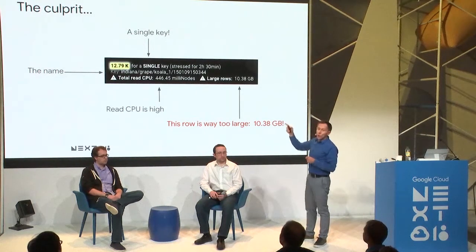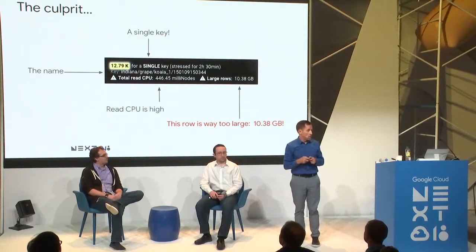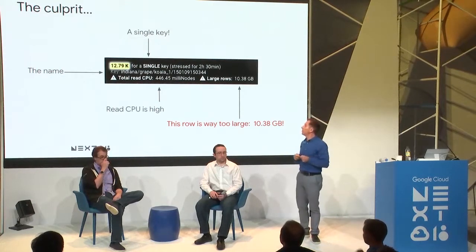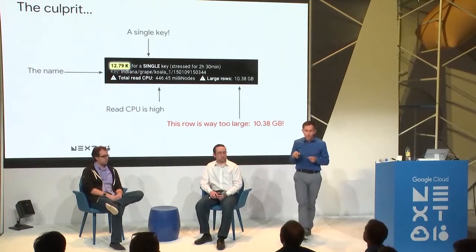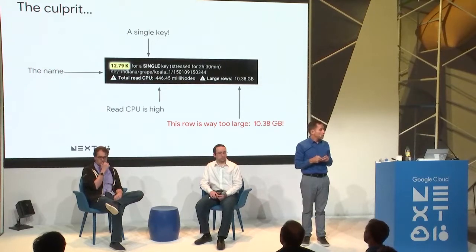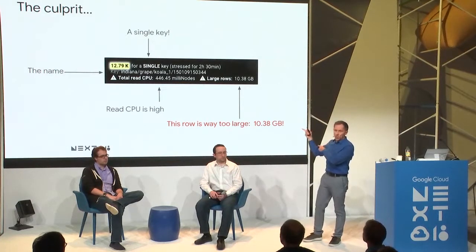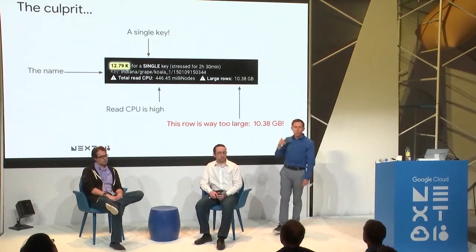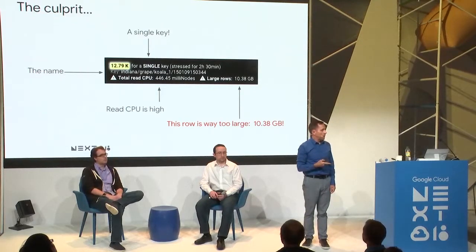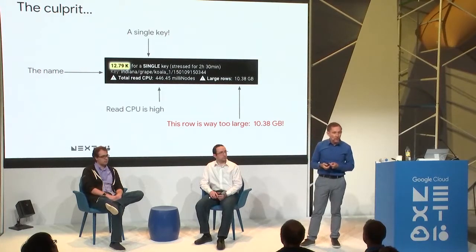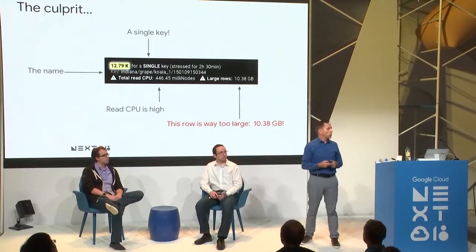When you hover over that glowing stripe with the tooltip, you see immediately the details of the problem. The most severe issue shown: it's a single key, stressed for two and a half hours. The exact name of the offending key is shown. Why is it bad? Look at the total read CPU — it's using 446 million nanoseconds of CPU, roughly half a server's worth, just for one key. The potential culprit: a large row of 10.38 gigabytes — well above the recommended maximum row size of 256 megabytes in Bigtable. So someone hammering that key and pulling out 10 gigabytes each time is obviously going to use a lot of CPU.